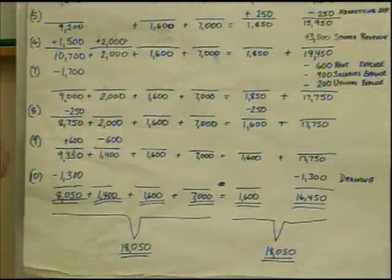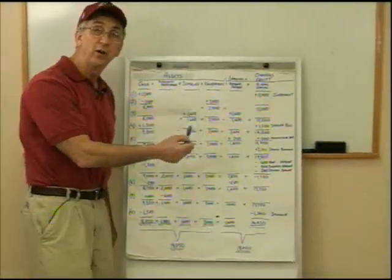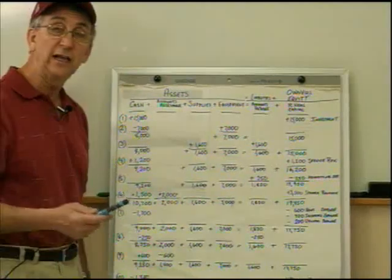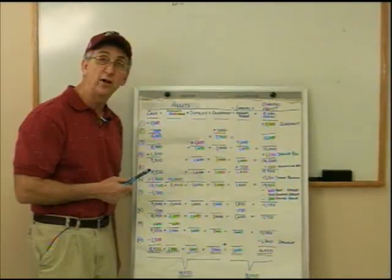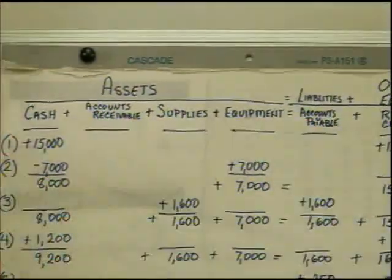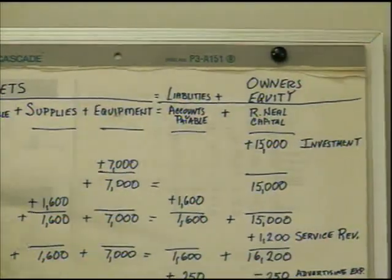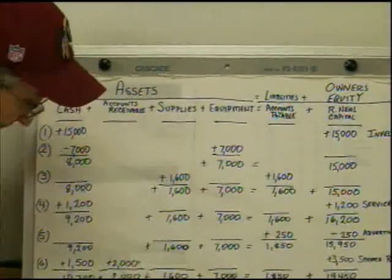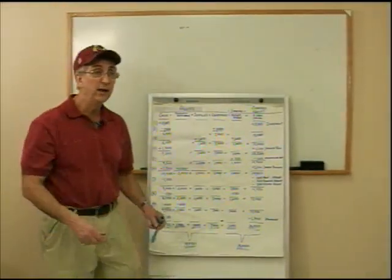One last note: under liabilities, you will generally find not just accounts payable but also notes payable, which would have its own column in the transaction analysis. It's important that you use the correct account titles from the textbook and come up with the correct dollar amounts. You don't need to update your totals after every transaction — the working papers may give you a column at the end to check that assets equal liabilities plus owner's equity. The important thing is that at the bottom, they are equal. That's all for today.